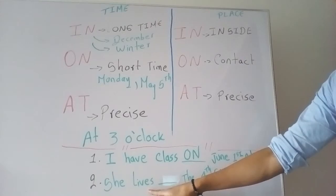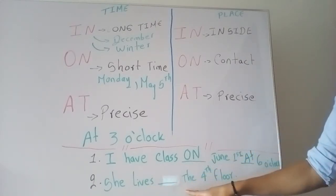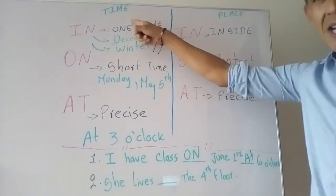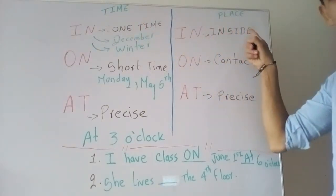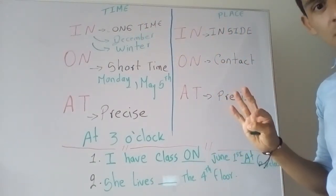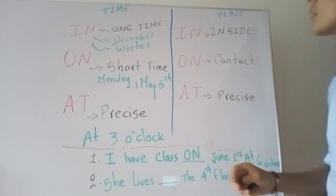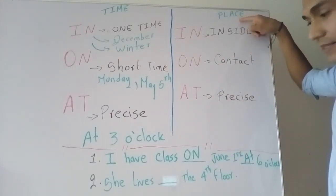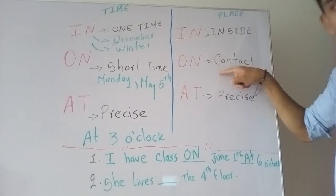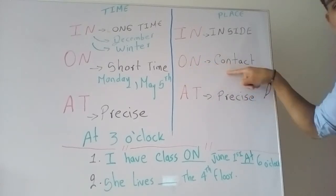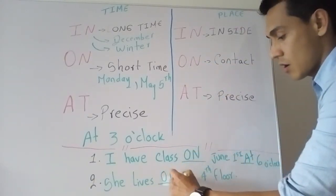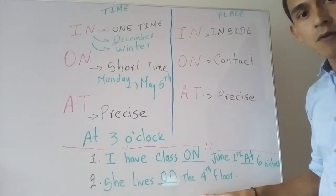Number two: She lives ___ the fourth floor. Time or place? The fourth floor is a place — in a house or a building. We use place prepositions. In, on, at — it is just contact, so we say 'on.' She lives on the fourth floor.